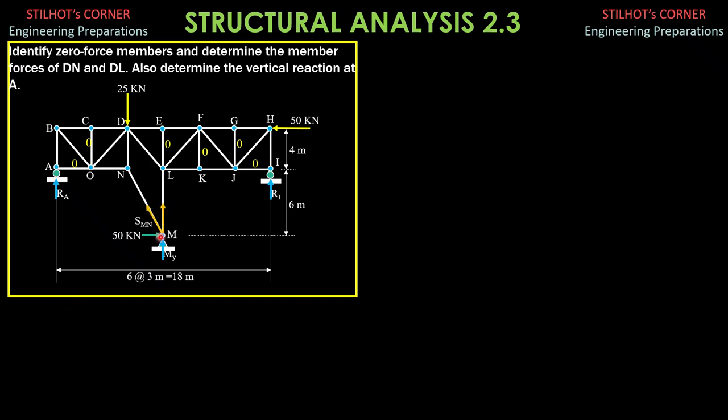So, first, at joint M, these are the unknown forces. The slope of MN is 3 horizontal, 6 meters vertical. So, 6 at 3 meters here. And we can reduce that to 3 is 1 and 6 is 2. So the hypotenuse is square root of 5 as shown. So again, 3 horizontal is just reduced to 1. 6 meters vertical is reduced to 2. So we divide by 3. So, 1, 2. So that's why it's square root of 5. Summation for horizontal, we can solve for SMN. So, 50 minus SMN times 1 over square root of 5 equals 0. So SMN is 50 square root of 5 kilonewtons. It is a tension member.